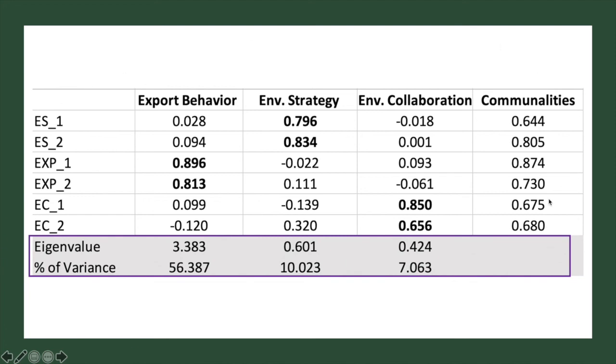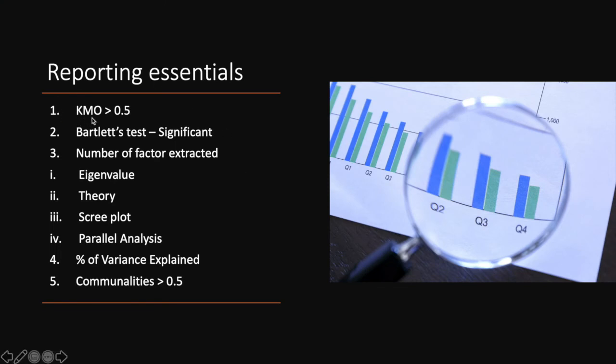Besides these values, there are also some other values that you need to explain. Among them are the value of KMO, Bartlett's test, number of factors extracted. You have to report the eigenvalue or you can justify via theory where in our case here we have run a force factor analysis based on our model which was structured based on theory. And if it was data reduction technique, then you have to report your screen plot, your parallel analysis. It has to be reported. Next, you have to also include the percentage of variance explained as we have already included in the table earlier. And you also need to report your communality. So these are some essentials that you have to include in your report.